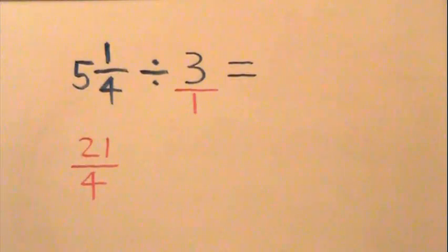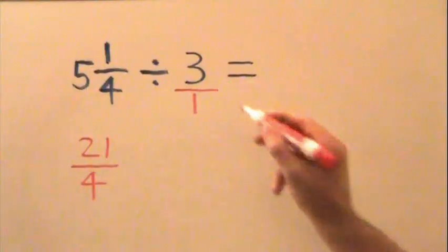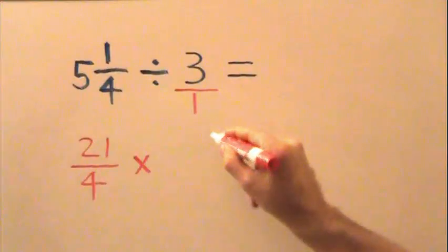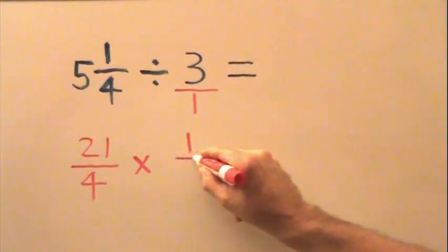Now remember, there is no division of fractions. We have to multiply and flip the second fraction. So we're going to go ahead and multiply. 3 over 1 is flipped to become 1 third.